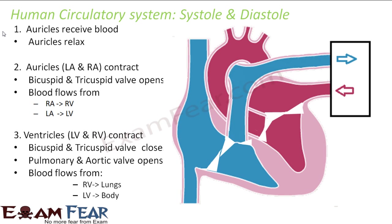Why do the auricles and the ventricles relax or contract? The blue color represents deoxygenated blood and the red color represents oxygenated blood. Let us understand the process step by step. The first step: the auricles receive blood. The auricles are the receiving chamber, so they will always receive blood. While receiving blood, the auricles will remain in a relaxed state.